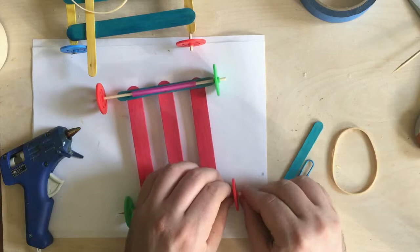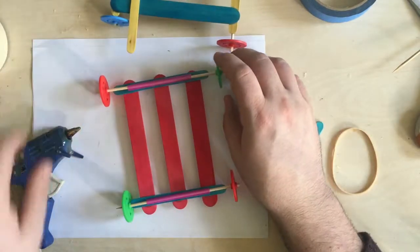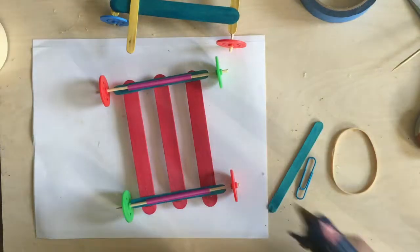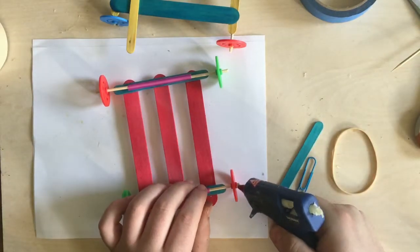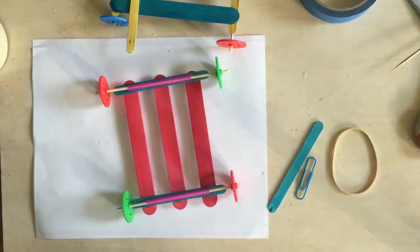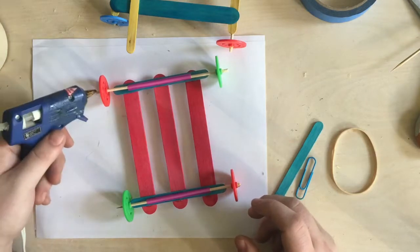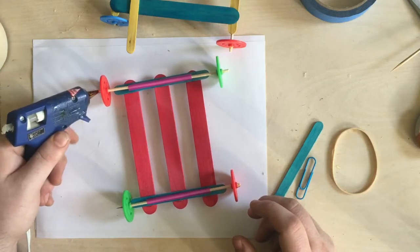And now what I'm gonna do is take my hot glue gun and just put a tiny drop of glue on each of the four wheels like so. So as you're delivering this to your class, I suggest you have maybe one glue gun for every four or five students.